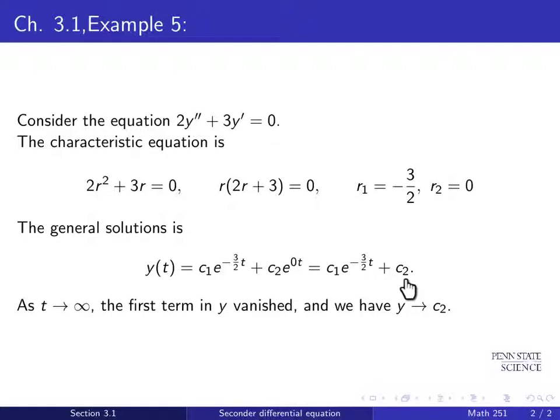So one can also discuss asymptotic behavior, that is, let time go to infinity. As time goes to infinity, what happens to the solution? The first term here, because of the negative term in front of t in the power of the exponential, this will vanish, which means it goes to 0. So asymptotically, the solution y will approach this constant c2, whatever constant it will be. It will be the asymptotic value for y.